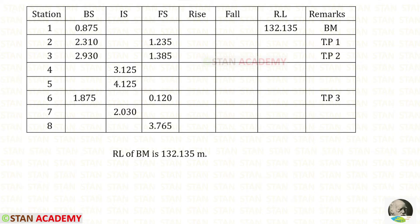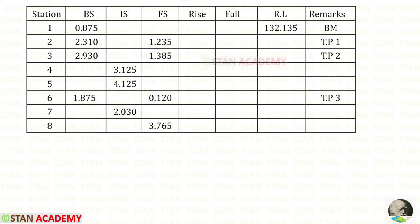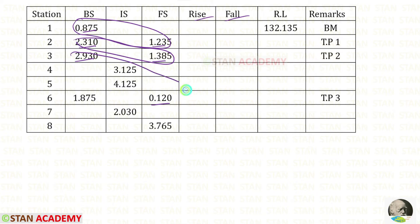The reduced level of the benchmark is given in the question as 132.135 meters. In stations 2, 3, and 6, there are both back sight and foresight — these stations are the turning points. Now we are going to find the rise and fall. We need to separate the readings from back sight to foresight. So totally there are 4 groups.